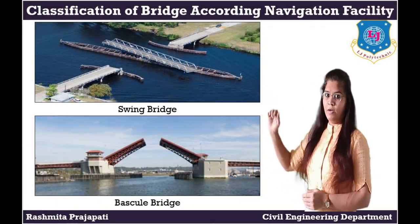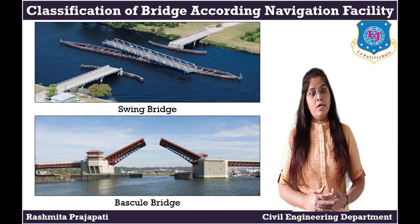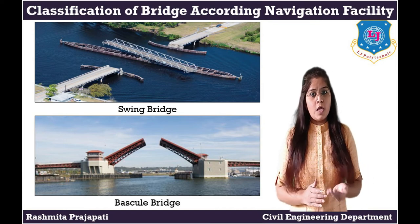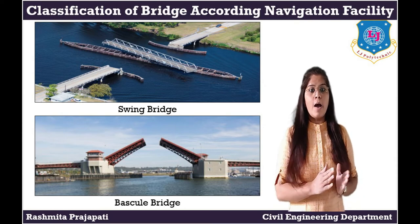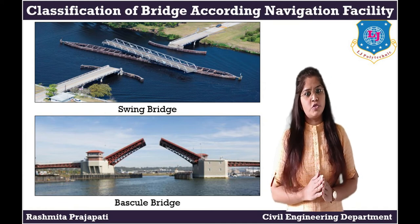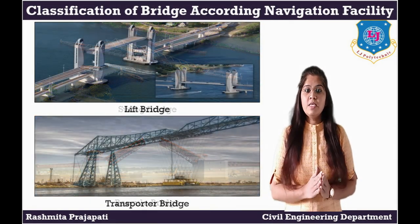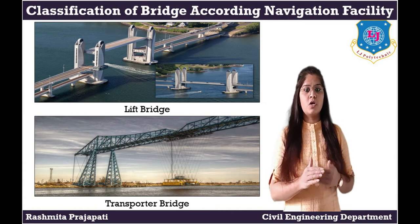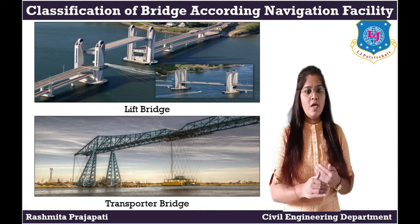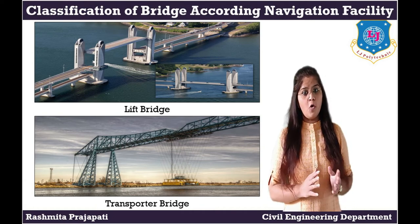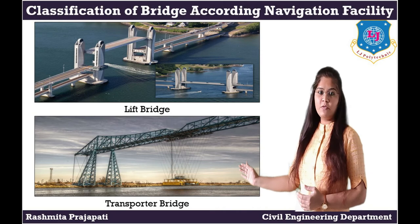Classification of bridge according to navigation. Moveable spans of bridge are sometimes used over navigation channels. Swing bridge: in a swing bridge, a central pier is provided with suitable bearings or ball rollers. Bascule bridge: in a bascule bridge, the entire superstructure is rotated in a vertical plane about the horizontal axis. Lift bridge: in this type of bridge, the truss is lifted up. Transporter bridge: in a transporter bridge, a moving cage is suspended from the overhead truss with the help of wire ropes, as we can see in the figure.